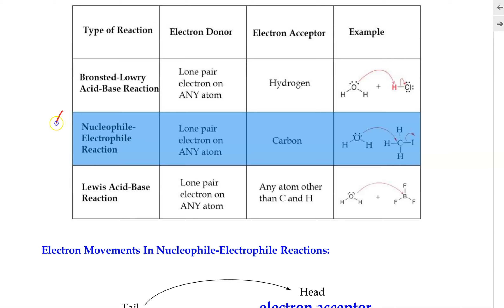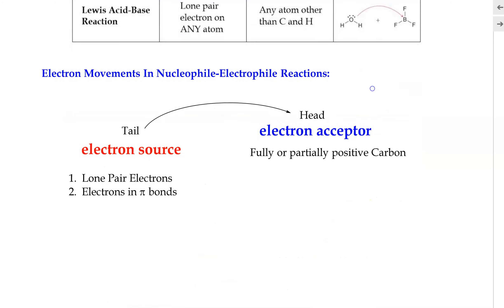This is a very important type of reaction in organic chemistry, since the electron acceptor is a carbon. The electron source is basically a lone pair of electrons on any atom. It can also be electrons in a pi bond, such as double and triple bonds, which are rich in electrons — that is also another source of electrons.